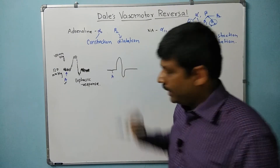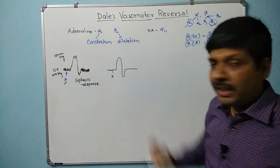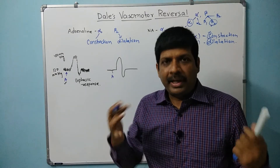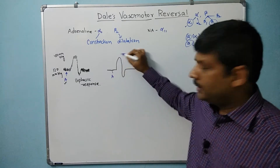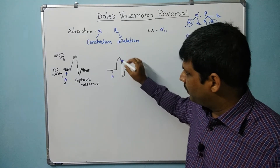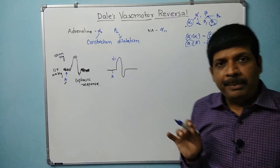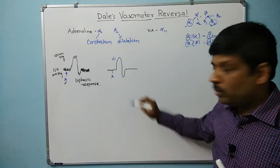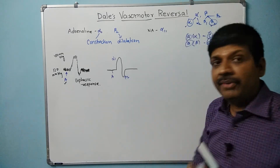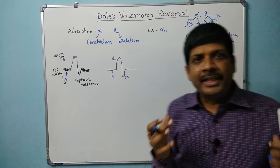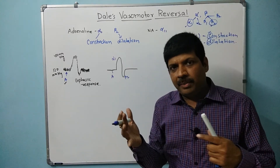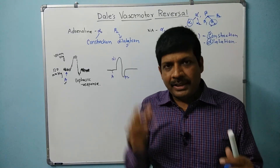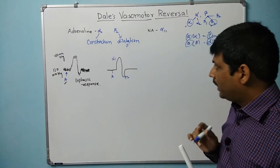When we give adrenaline, there is first an increase in response. It acts on both alpha and beta adrenoceptors. The increase in blood pressure we see is mainly because of alpha 1-mediated vasoconstriction. When vasoconstriction occurs, total peripheral resistance increases, causing an increase in blood pressure. Whereas when beta 2 is stimulated, beta 2 causes vasodilation, which results in a decrease in total peripheral resistance, leading to a decrease in blood pressure.